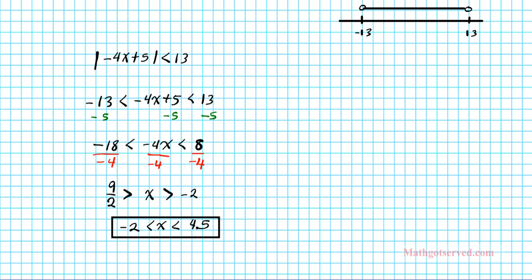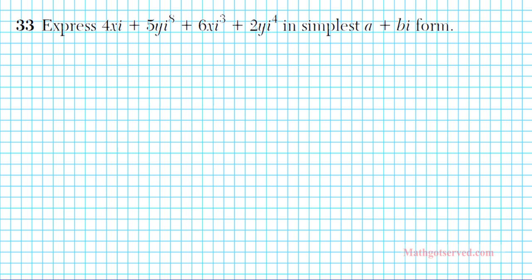Let's take a look at the last problem in this installment. For problem 33, we have to express 4xi plus 5yi to the 8th plus 6xi to the 3rd plus 2yi to the 4th in simplest a plus bi form. If you take a look at the a plus bi form, you'll notice that there isn't any i with a power greater than 1. Whereas in this problem we have i with powers greater than 1.